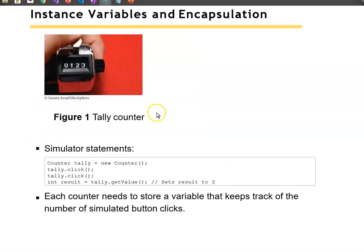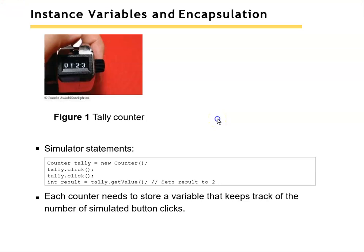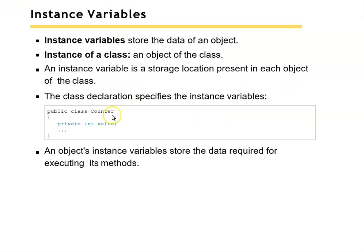So let's talk about instance variables and encapsulation. In this first example you see a tally counter. When we use a tally counter we need to store information about the number of clicks and how to increment and decrement that. And to do that we'll use an instance variable. Instance variables store the data of an object, and they are localized to the instance of that object.